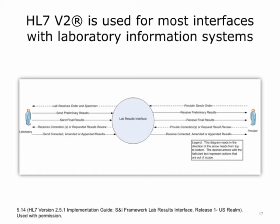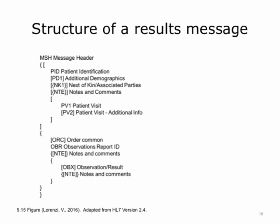We have been looking at a patient administration message, so now let's look at a laboratory message as an example. This picture is from an implementation guide and shows how the lab results flow might work. Implementation guides constrain standards and give more information; this one is constrained only for laboratory messages and requires that all lab tests be encoded using the LOINC standard terminology. In this scenario, the doctor sends an order to the lab results interface, which forwards it to the lab. The lab receives the order and specimen, sends preliminary results, and sends final results later. The provider could provide corrections, so there is actually a bi-directional workflow happening here.